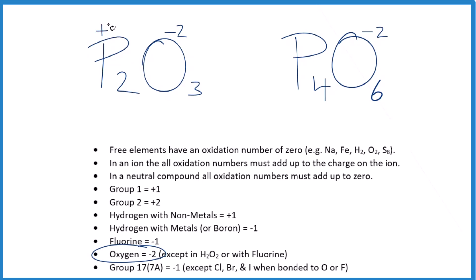2 times positive 3, that's plus 6. Here we have 3 times negative 2, that's negative 6, adds up to zero. So these are the oxidation numbers for P2O3.